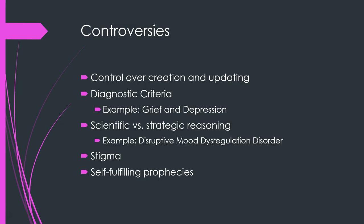Some controversies to be aware of include questions about who controls the creation and updating of the DSM and what constitutes diagnostic criteria. For example, the grief exclusion for major depressive disorder raises questions about how long it's normal to grieve before it becomes depression. There's also scientific versus strategic reasoning — sometimes disorders are created for strategic reasons. For instance, disruptive mood dysregulation disorder was created in response to the over-prescription of medications for childhood bipolar disorder.